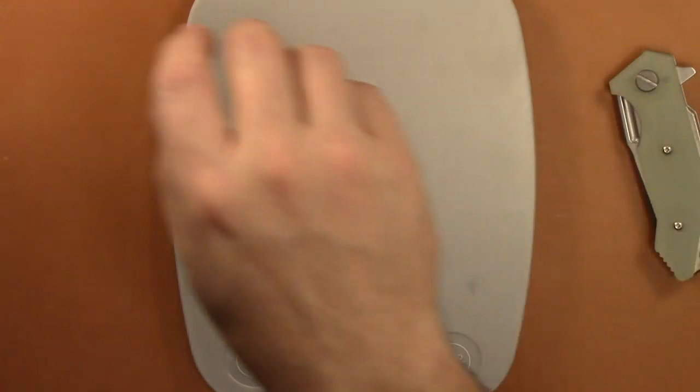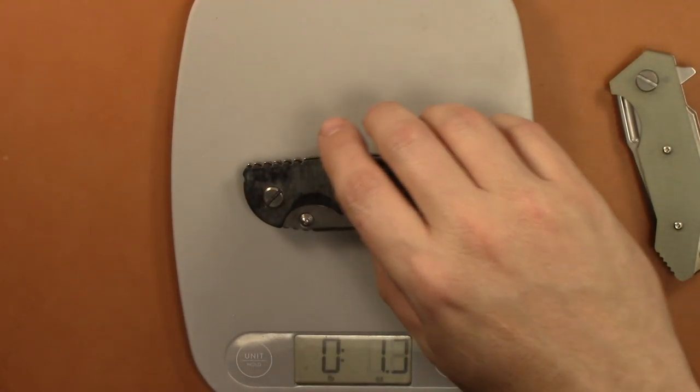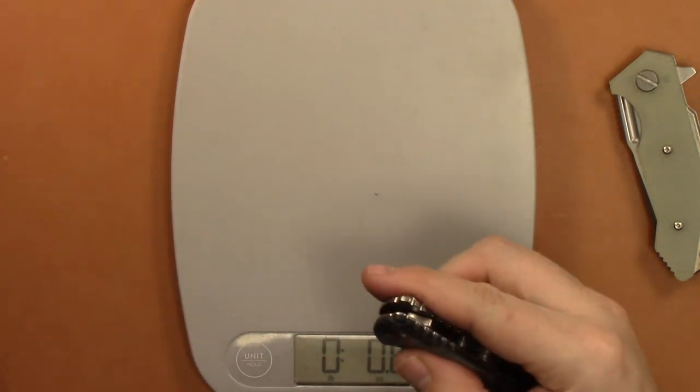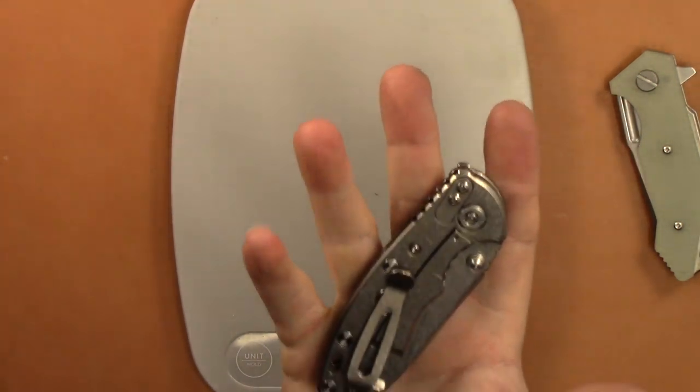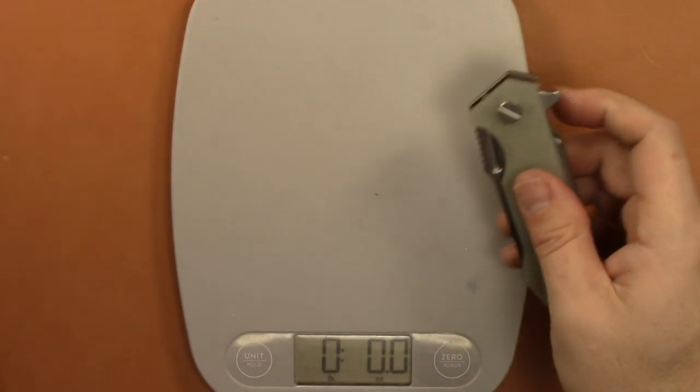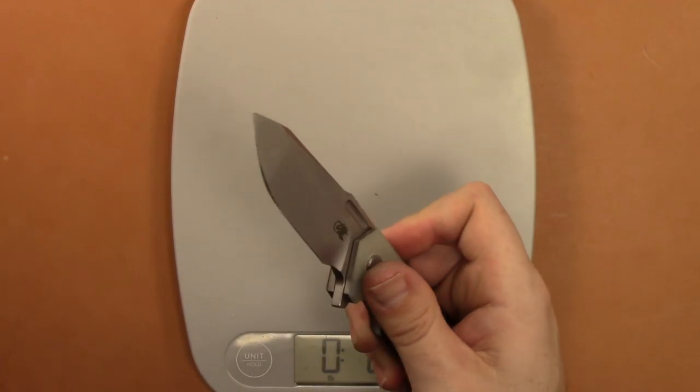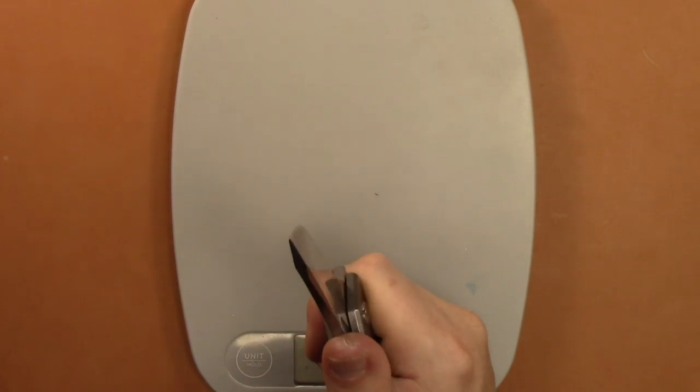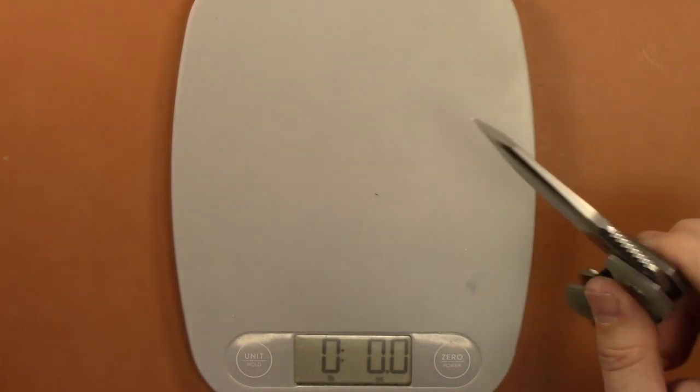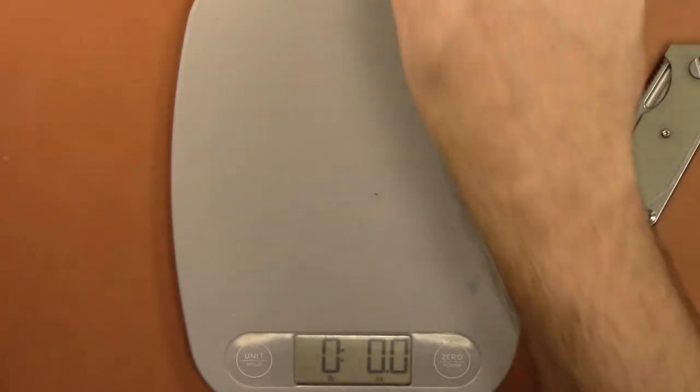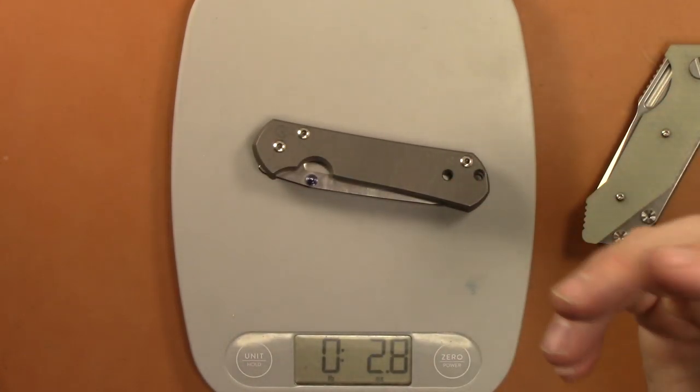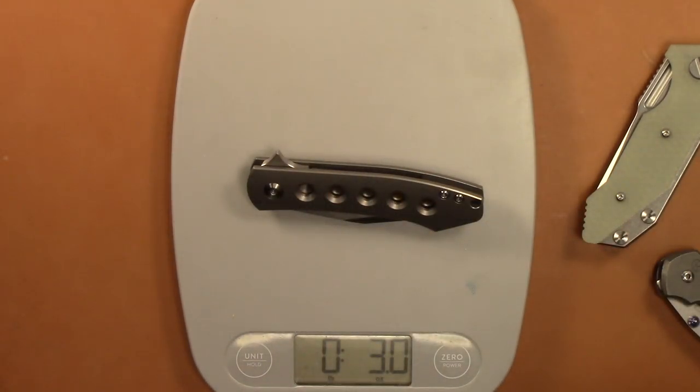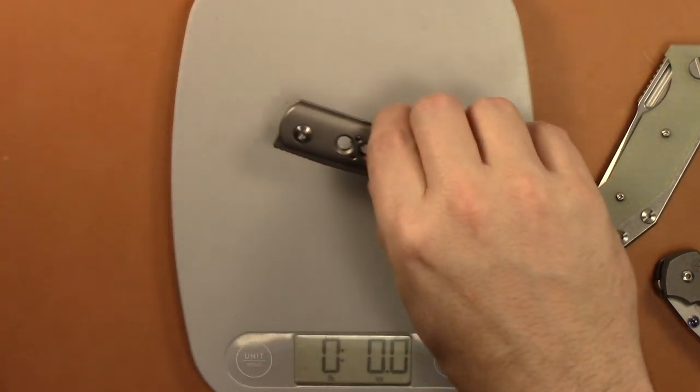4.2 ounces, which is pretty hefty for that little guy. Three inch Hinderer is only 3.3, so almost a full ounce lighter than its little brother technically. But it's because you've got just really thick titanium, you've got thicker blade stock, a lot going on. And the small Sebenza is 2.8 ounces. 3.0 even. The Feist is under three. 2.6, very lightweight knife.